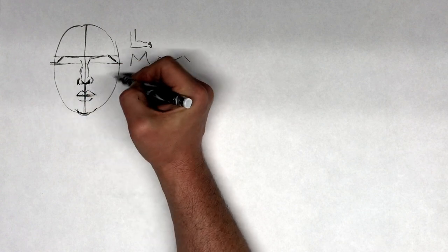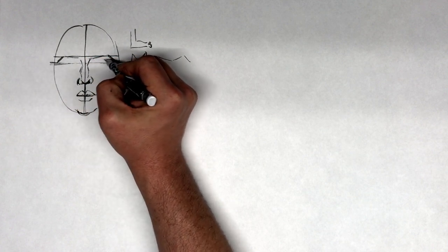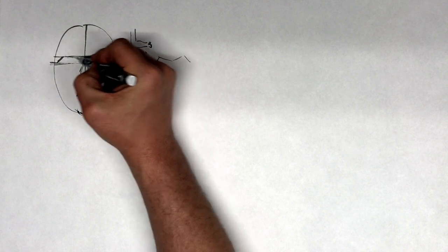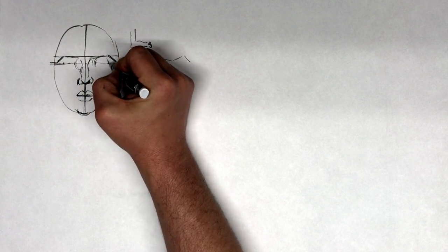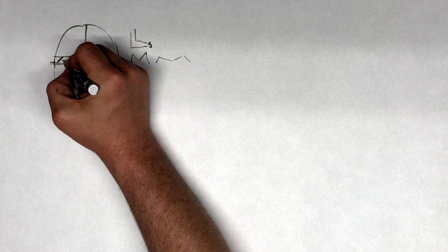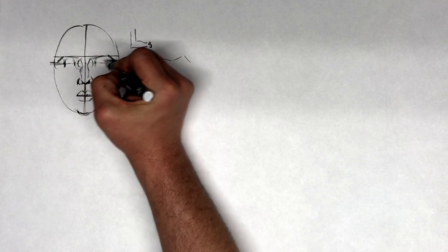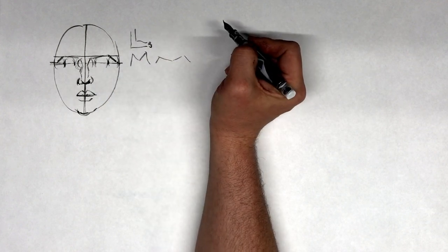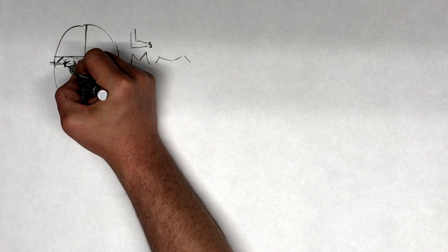Eye placement can be really tricky, but a couple of rules to keep in mind. In general, the eyeball — the distance from one side of the eye to the other — is about one-fifth the width of the head. So if we measure out one-fifth increments, we'll have a pretty good idea of how big to make the eyes. Right now we've got five eyeballs: one eyeball in between the eyes, and then one eyeball from the corner of the eye to the edge of the head. Here's one eye, and then here is our other eye.